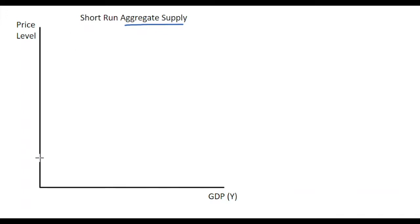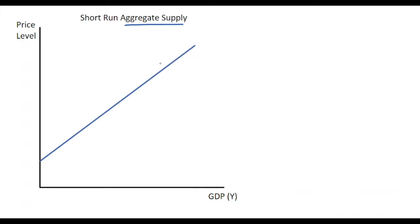The short run aggregate supply curve is an upward sloping line in general, showing the total quantity of goods and services produced by firms and sold at any given price. Because it's upward sloping, it shows a positive relationship between the price level and GDP. For example, if we take a price level of P1 and relate this to the output GDP level, we can start off with a rate in the economy of P1 and GDP1.